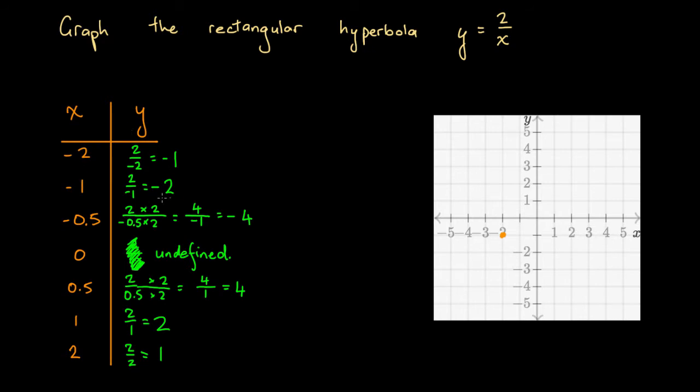x equals minus 1, we've got y equals minus 2. That's 1 unit left of the origin and 2 units down. Here we've got x equals minus 0.5, and the corresponding y value is minus 4. So this is minus half and minus 4.